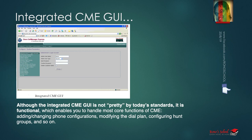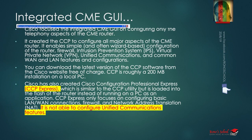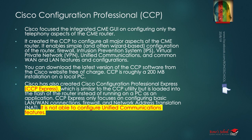Now, what is CCP? Cisco focused the integrated CME GUI on configuring only the telephony aspects of the CME router. The TAR file downloaded from Cisco is only for voice-related things — you cannot configure NAT or ACLs through it. It is just for voicing. So Cisco focused the integrated GUI on configuring only the telephony aspects of the CME router.